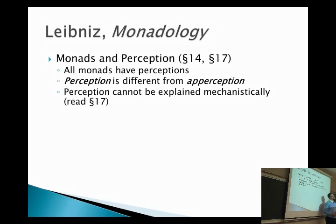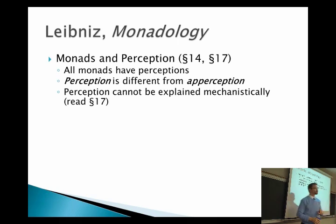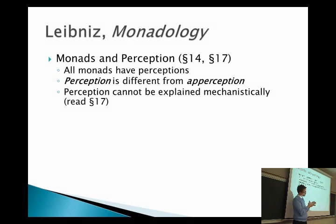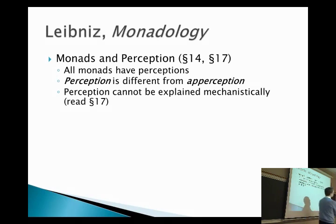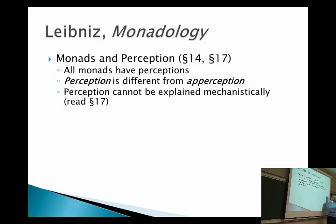Why does he say you couldn't find consciousness in a machine? Some of you might be inclined to think your consciousness is just something caused by the brain. Well, Leibniz says: imagine we could just enlarge your brain by like a hundred times and give walking tours of it. You know, here's Jane's brain — here's the hippocampus. If Jane was thinking of a pink hippopotamus, you could tour her brain and see all the parts, the chemical reactions, the synapses, the neural networks. You could get a complete examination of it. Would you ever find a pink elephant in there? No — you would just find a bunch of events that are different from being a pink elephant.